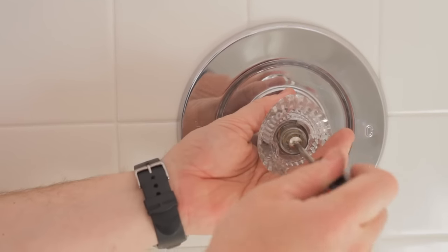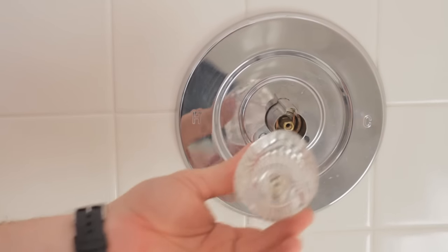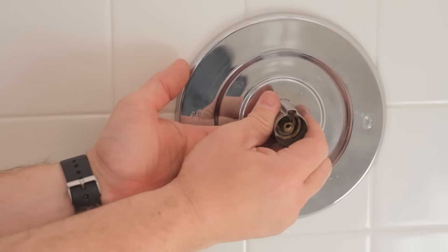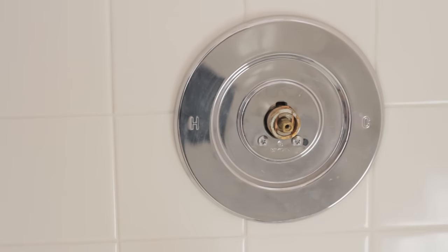Now there's different styles, different brands. This one's a single control shower faucet. Remove your handle. On this particular one you have a small tube that needs to be removed and then a clip.